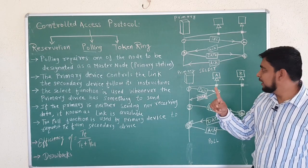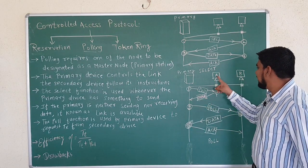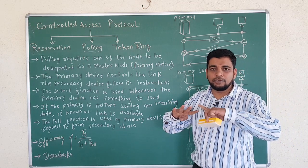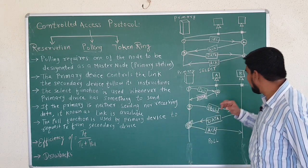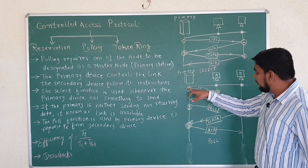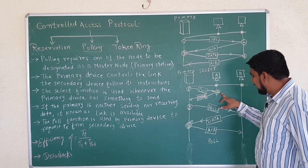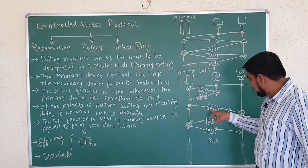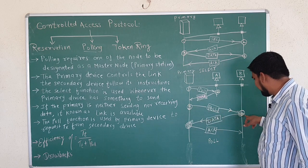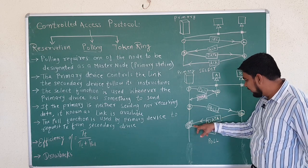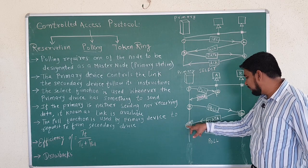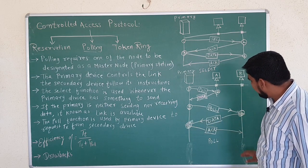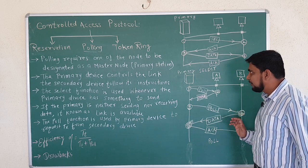This polling cycles through all nodes. If there are nodes A, B, C, D, the primary will poll A, then B, then C, then D, then A again cyclically. When the primary polls the secondary and gets a negative acknowledgement, it moves to the next device. When a secondary has information to send, the primary acknowledges it. In this way, information collision is avoided in polling.